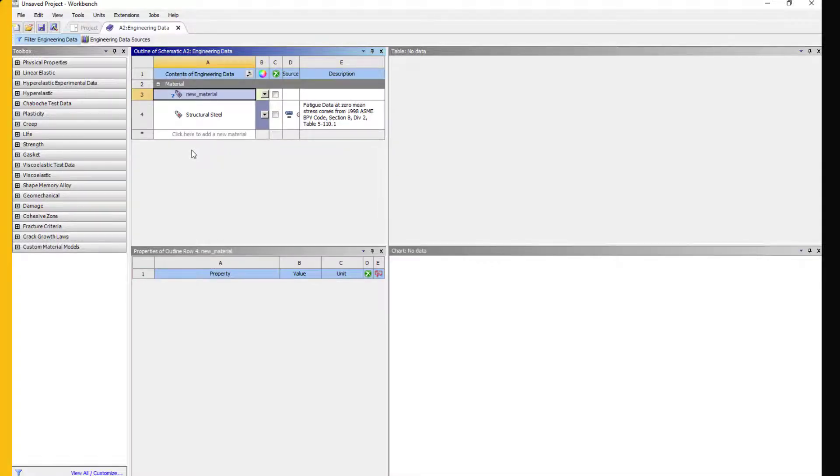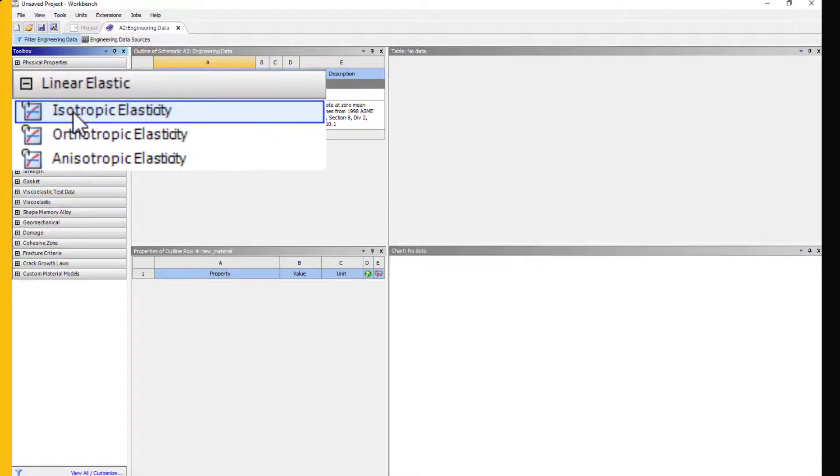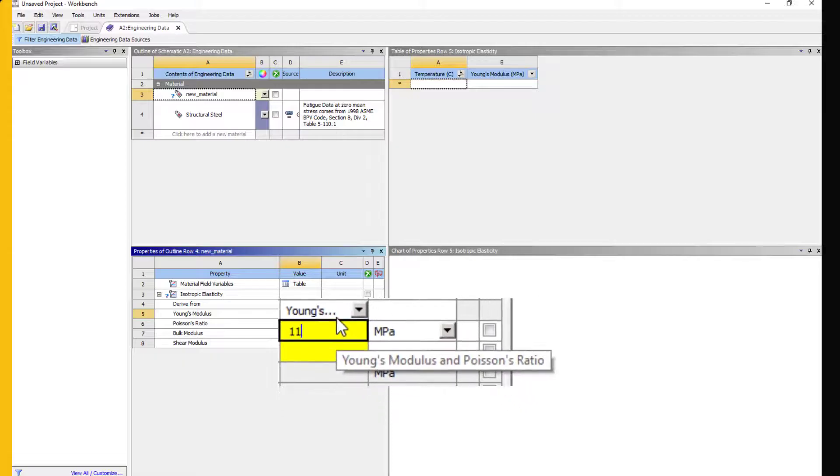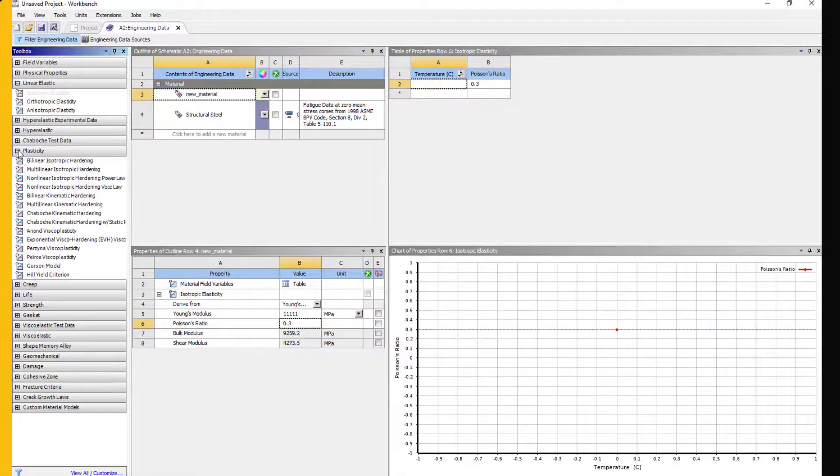Now, we need to define material properties for the new material. Insert isotropic elasticity from the toolbox and define Young's modulus as calculated previously. Poisson's ratio is another required material property for the linear elastic part of the material definition.